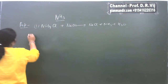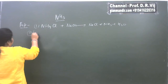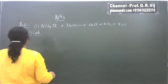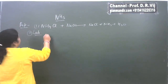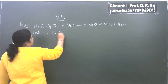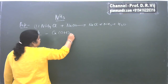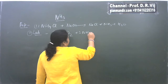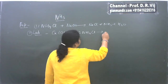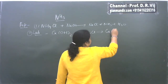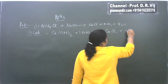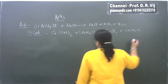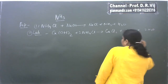This is one method of preparation. Using this same pattern, in the laboratory it is prepared by the reaction of slaked lime, that is calcium hydroxide, with ammonium chloride, so that the product is calcium chloride, ammonia, and water.